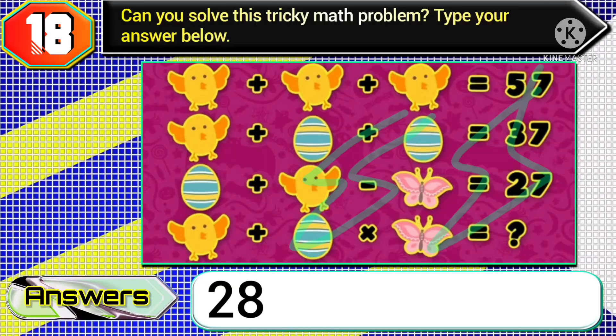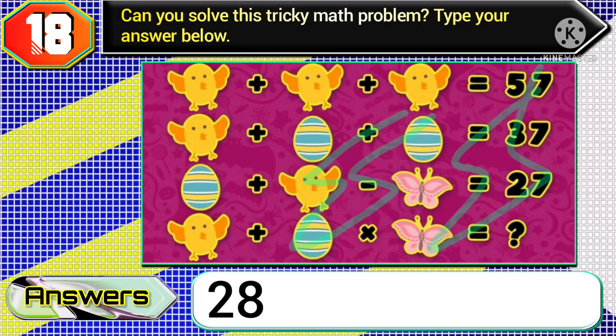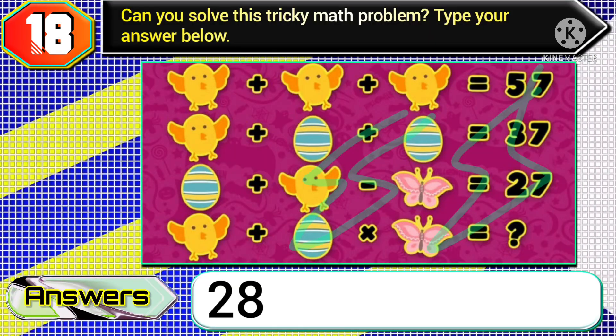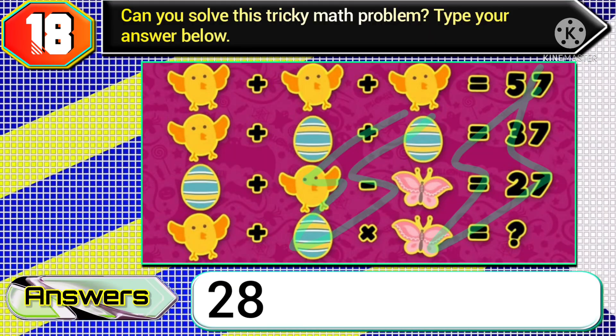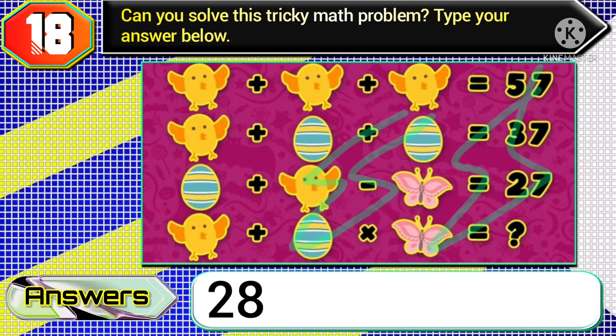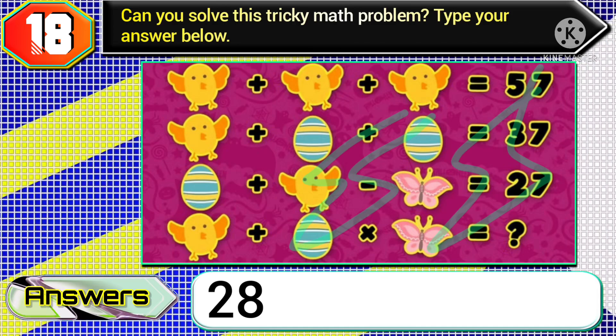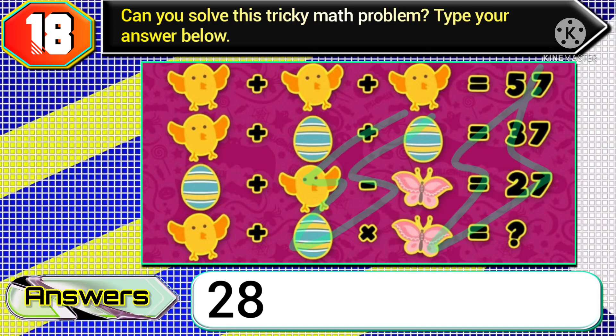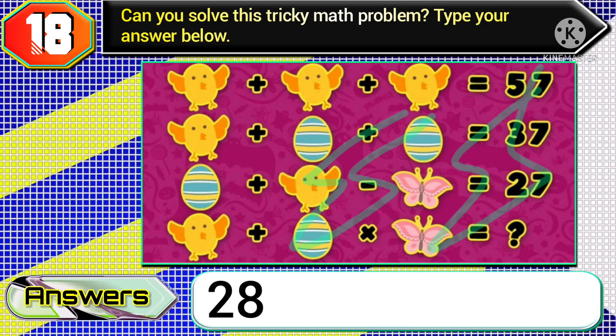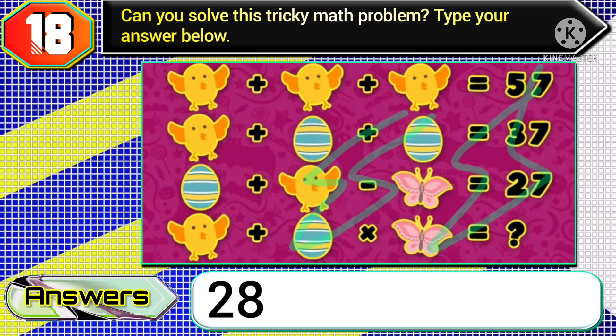Finally, in variant three of this question: if you get the total amount of 3 chickens equals 57, then you need to type the answer 28.